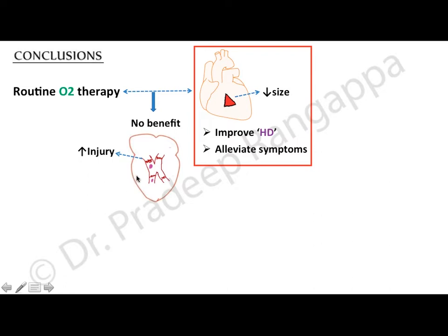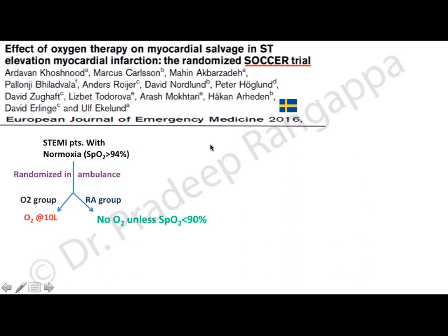After this, the Swedish group came out with the SOCCER trial in ST-elevation MI. It took normoxic ST-elevation MI patients — normoxia defined as saturation more than 94 percent — and randomized them in the ambulance to an oxygen group or a room air group. The oxygen group received 10 liters per minute; the study group received no oxygen unless saturation was less than 90 percent. All patients underwent PCI and cardiac MRI at day two and day six.